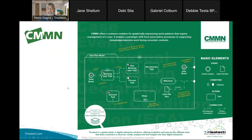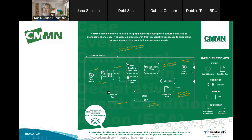Looking at the CMMN notation, the folder shape here represents your context — it gives you the context of that case file in which you're working. We have different notation to capture the notions of event, condition, and action. Events can be actual event listeners like timer events or user events, but they can also be case file events — for example, a new item is provided into the case file, or a particular item is updated, a document is updated, a value is updated. These are used as triggers, and we verify whether a condition is met. An entry criterion is the condition for entering into an element, and an exit criterion is the condition for terminating the work.